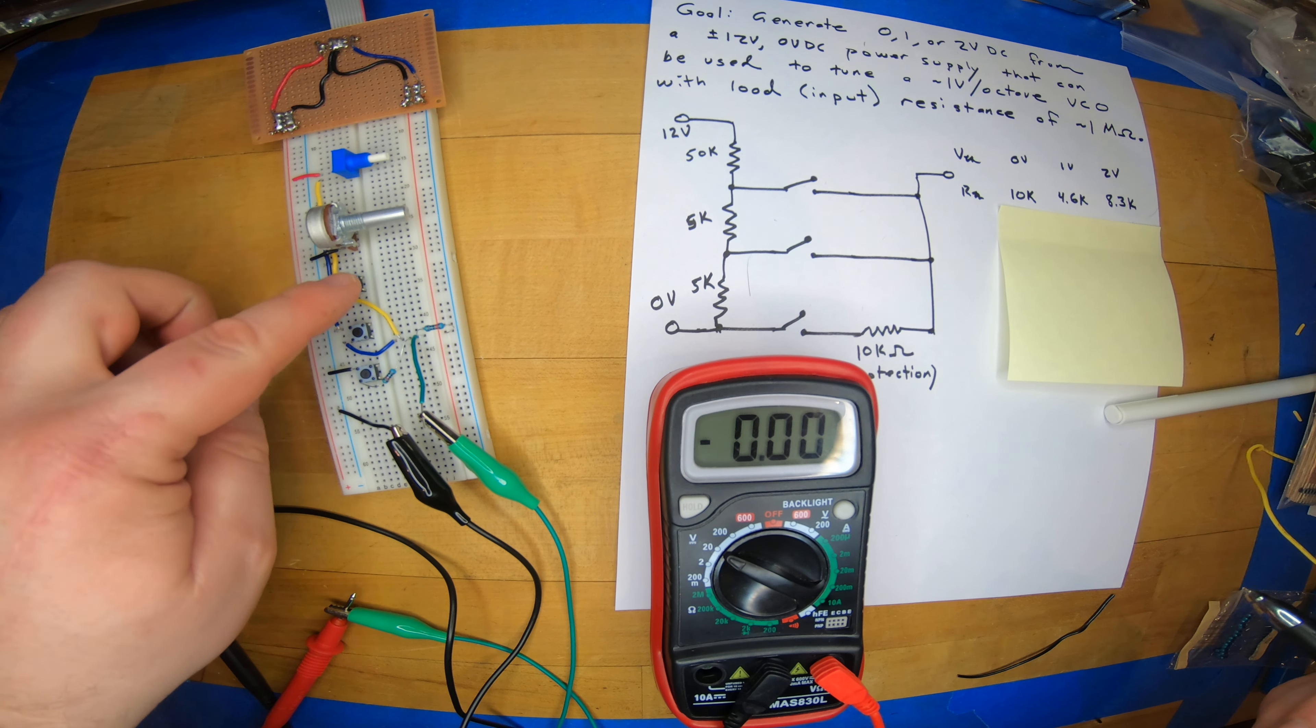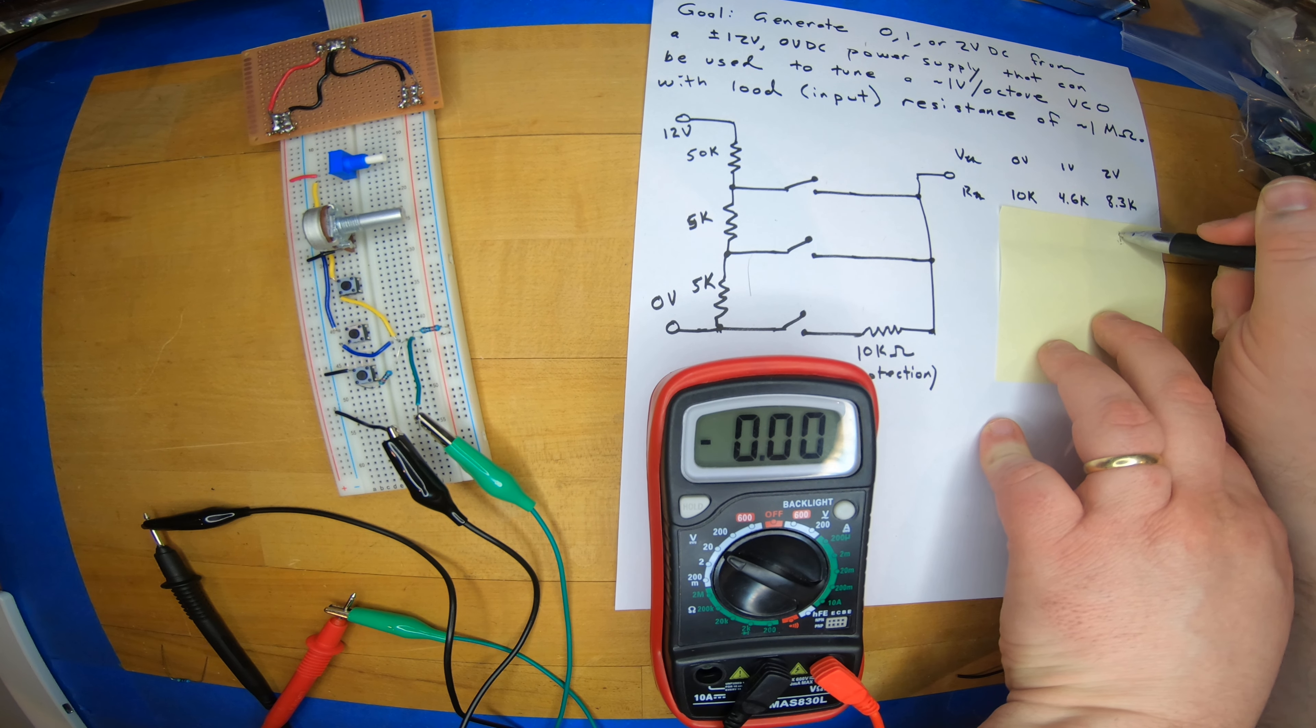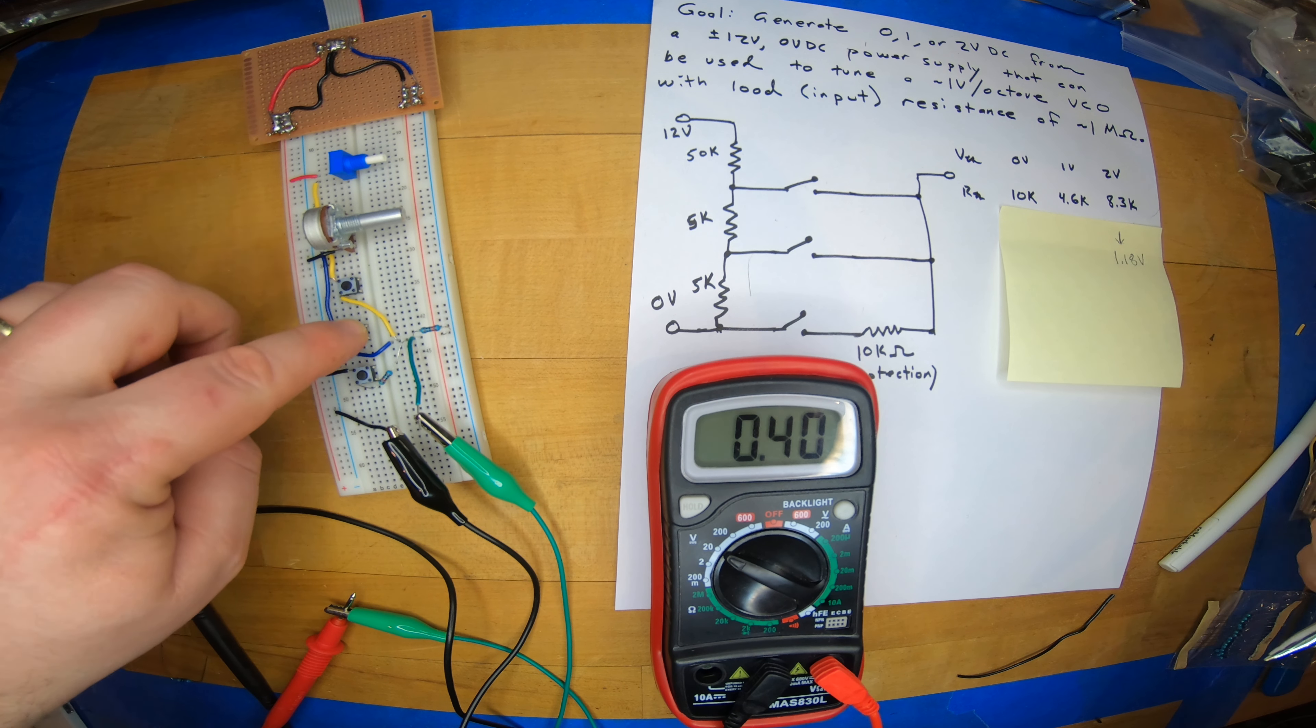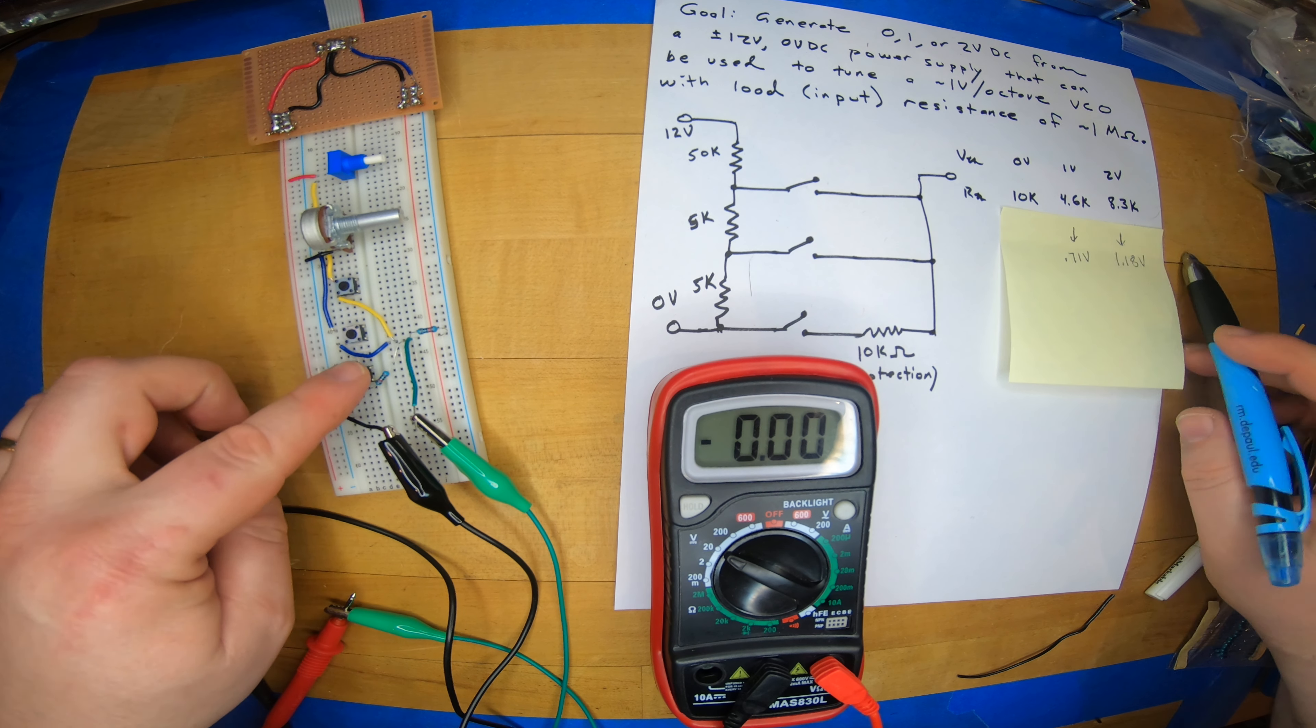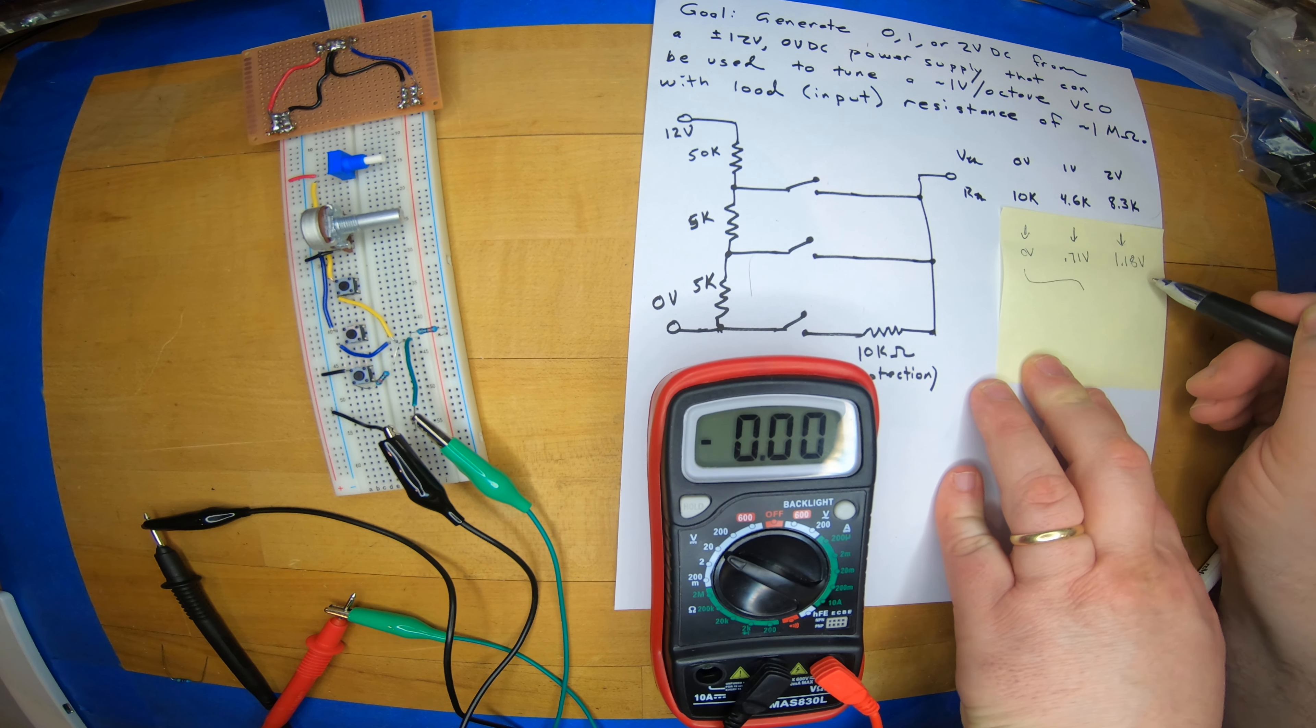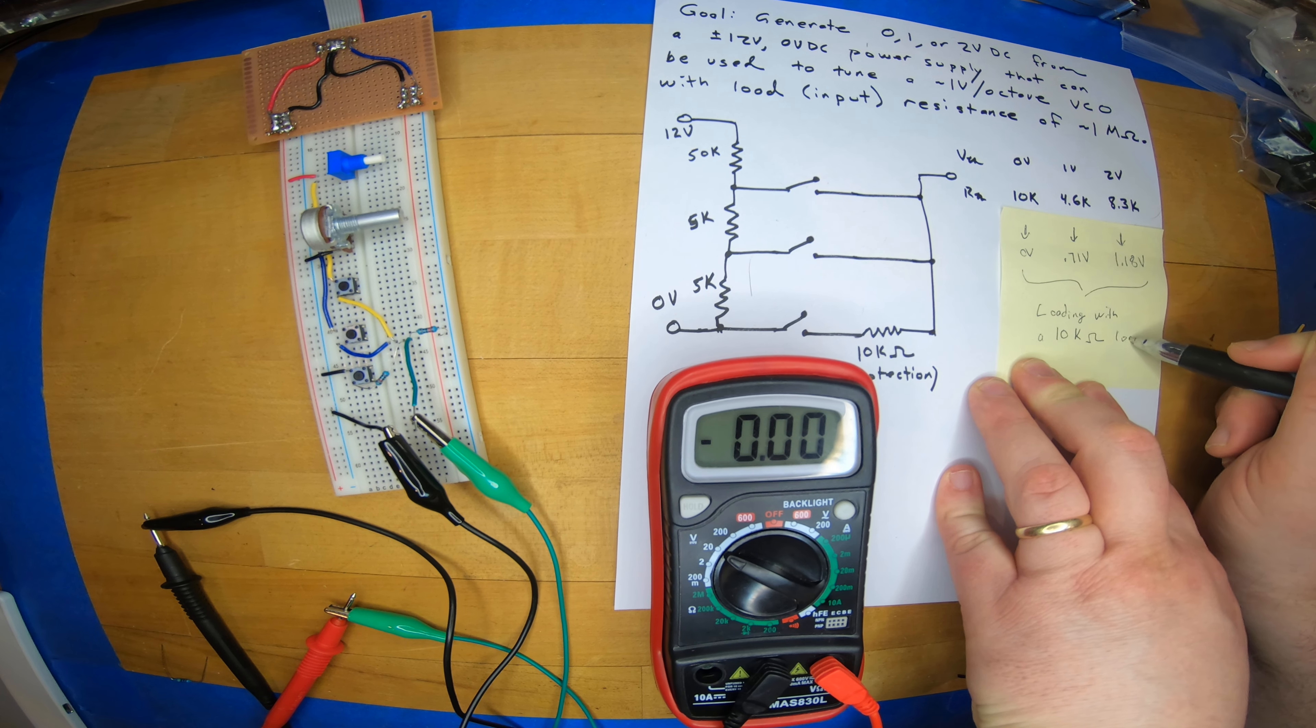So these are the loaded values. It goes from 2 volts to 1.18, from 1 volt to 0.71, and from 0 volts, of course, we still get 0 volts. And these are all loading with a 10K load resistor.